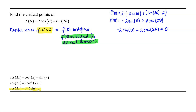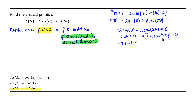Our equation becomes negative 2 sine of theta plus 2 times the quantity 1 minus 2 sine squared of theta, all equals 0. Let's distribute the 2, and we get negative 2 sine of theta plus 2 minus 4 sine squared of theta equals 0.